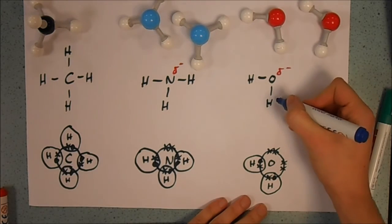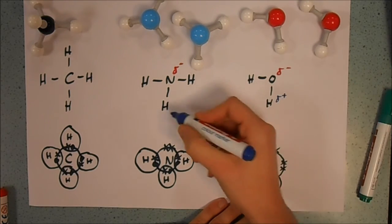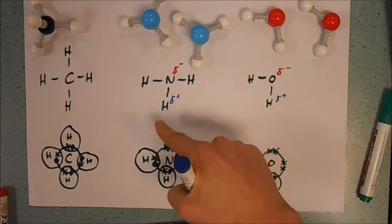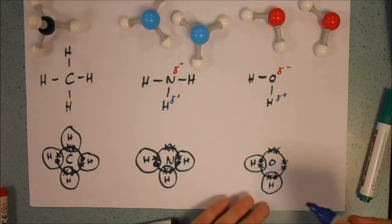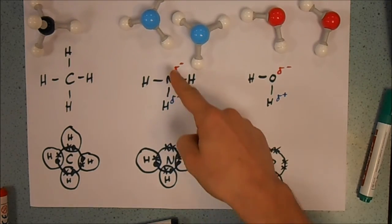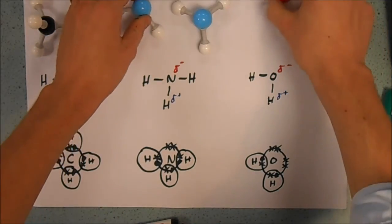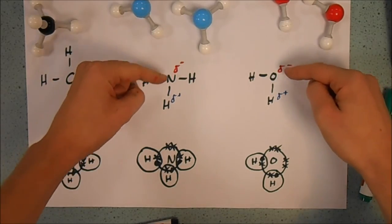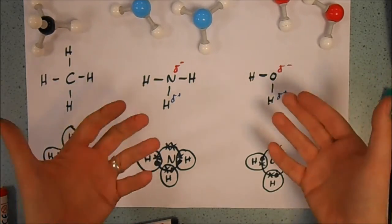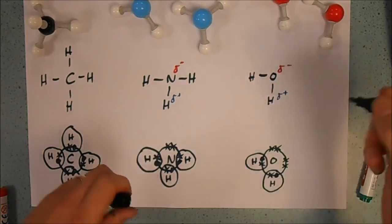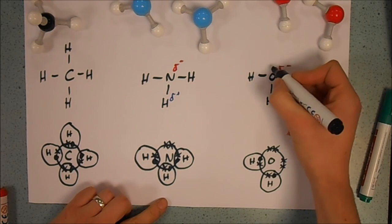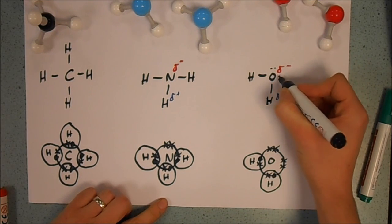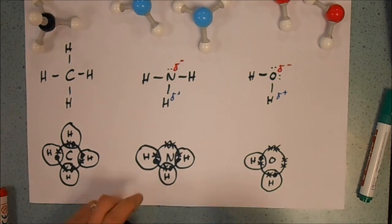And if I put a delta positive here, delta positive here, it doesn't actually matter which hydrogen this is on. Then we can see that we have two molecules which are polar. There's a dipole here, so negative and positive, which will attract other dipoles. But also we have some lone pairs of electrons, and it's very important when you're drawing this to put the lone pairs of electrons in.